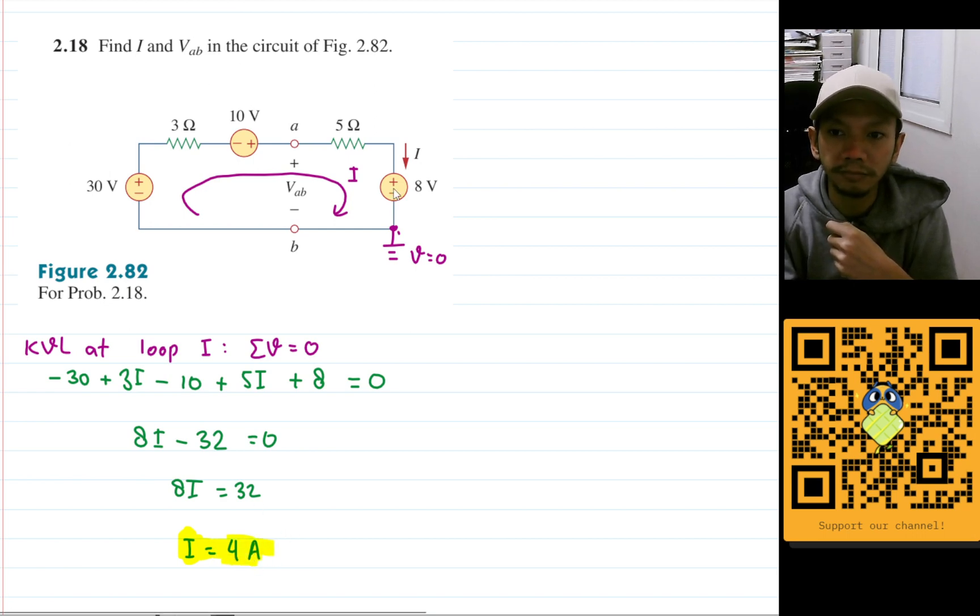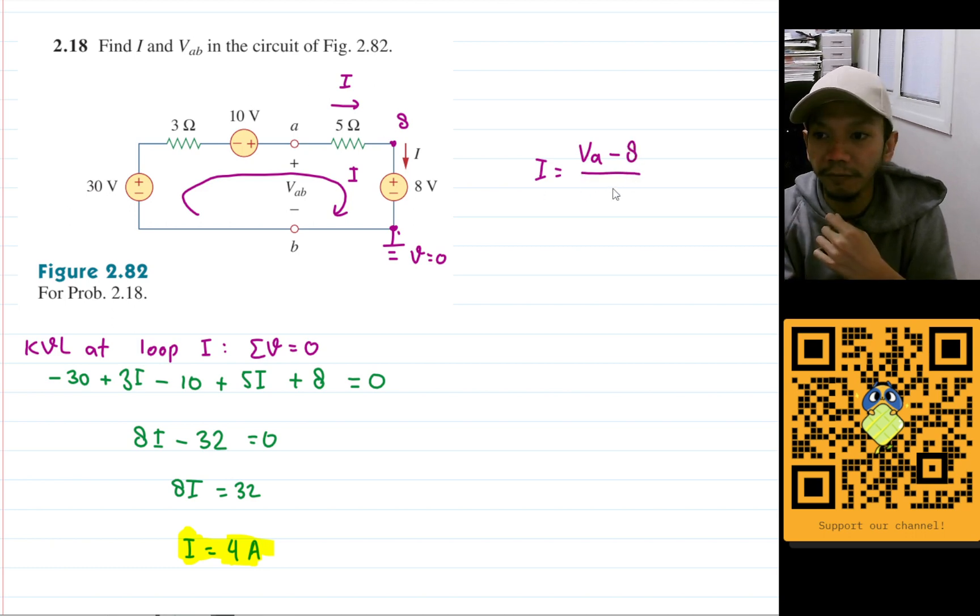Now let's do Ohm's law here. This node here will be 8 volts from the ground. This current here will be the same as I, but then I can be calculated using Ohm's law, which is the difference of the voltage. So I will have Va minus 8 divided by the resistance between them, which is 5.